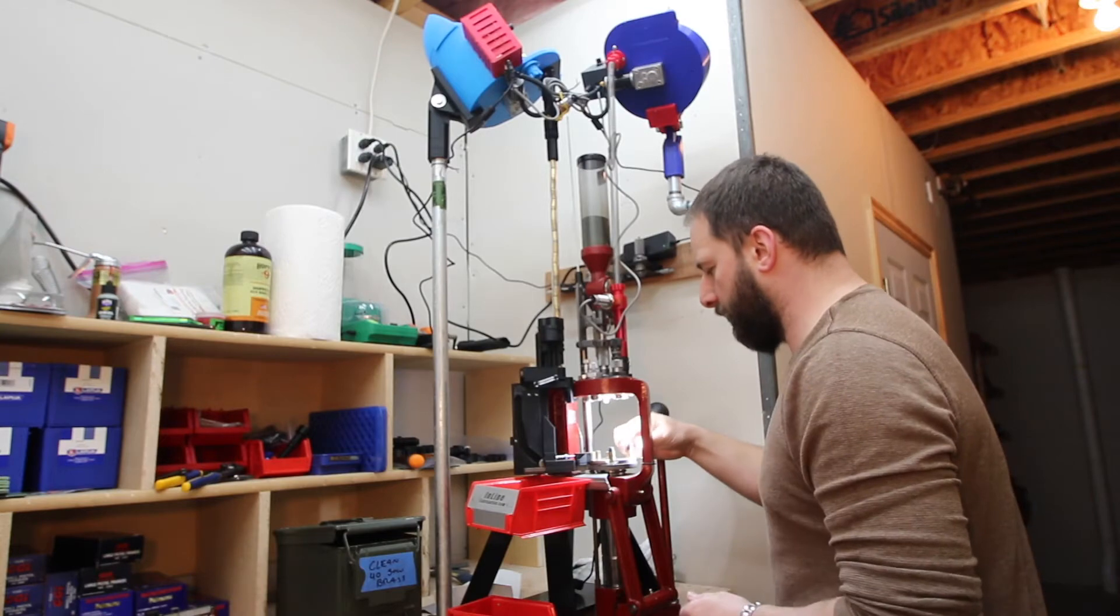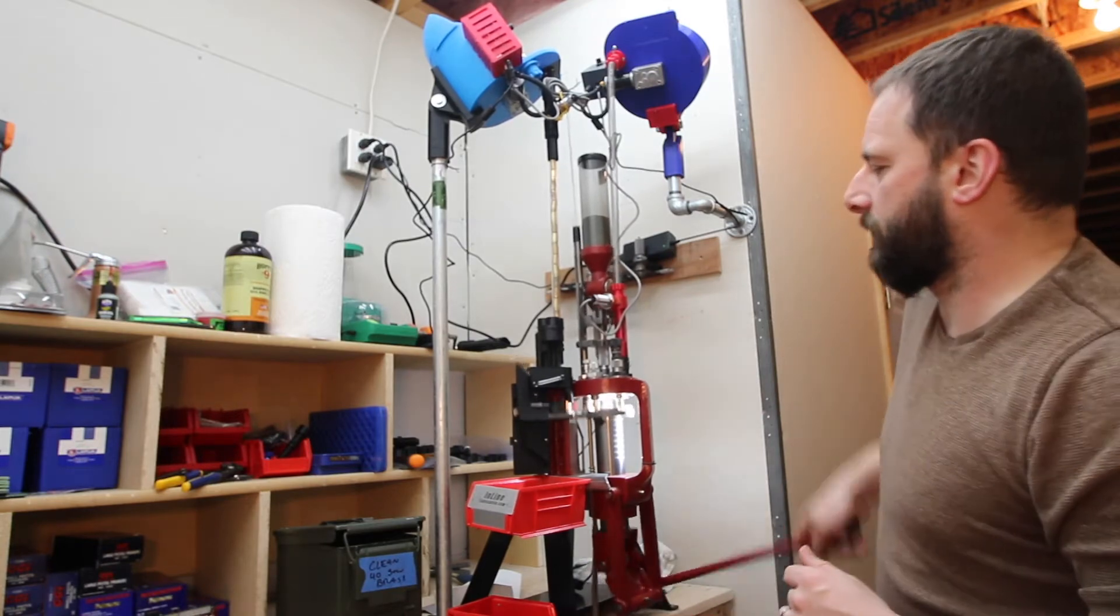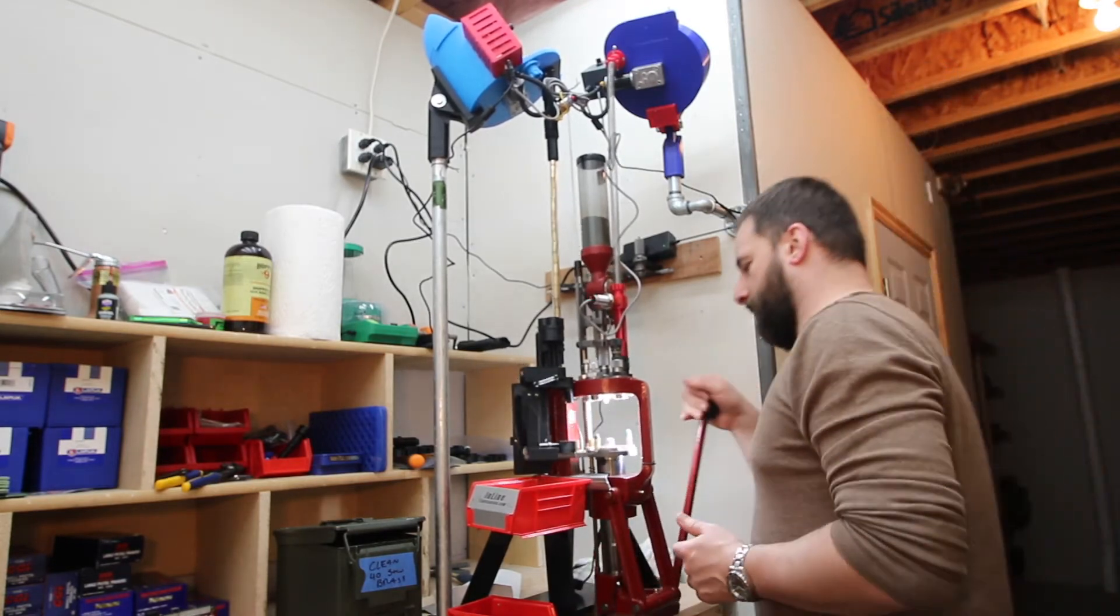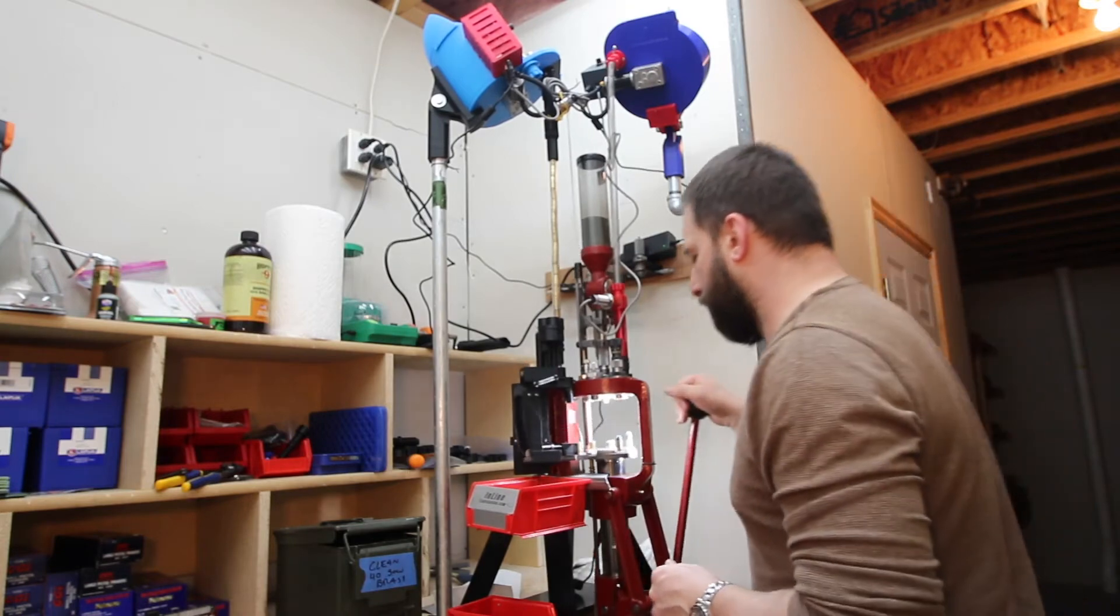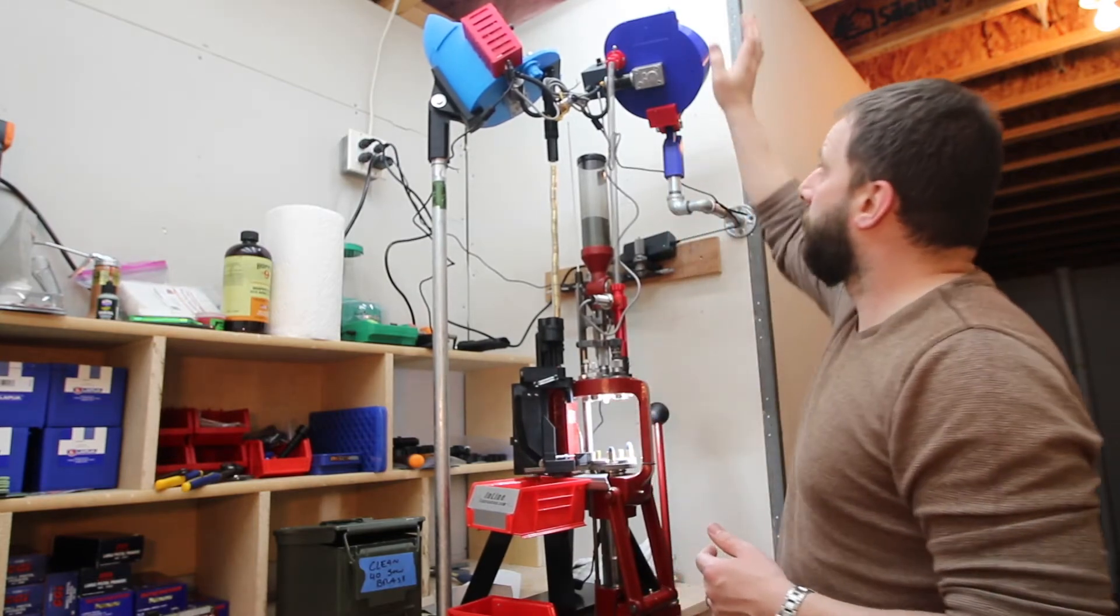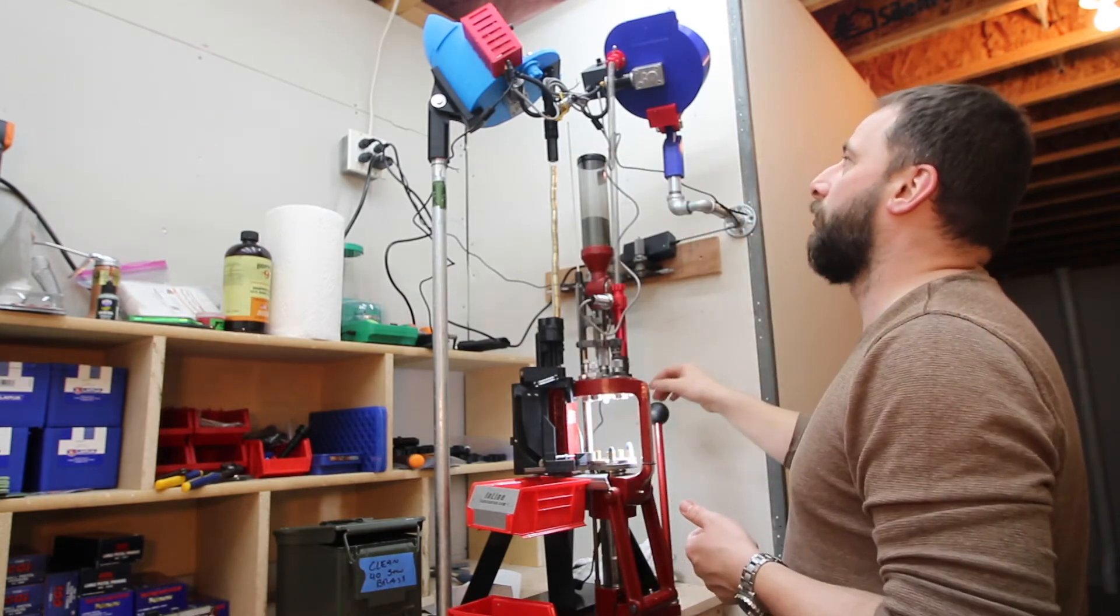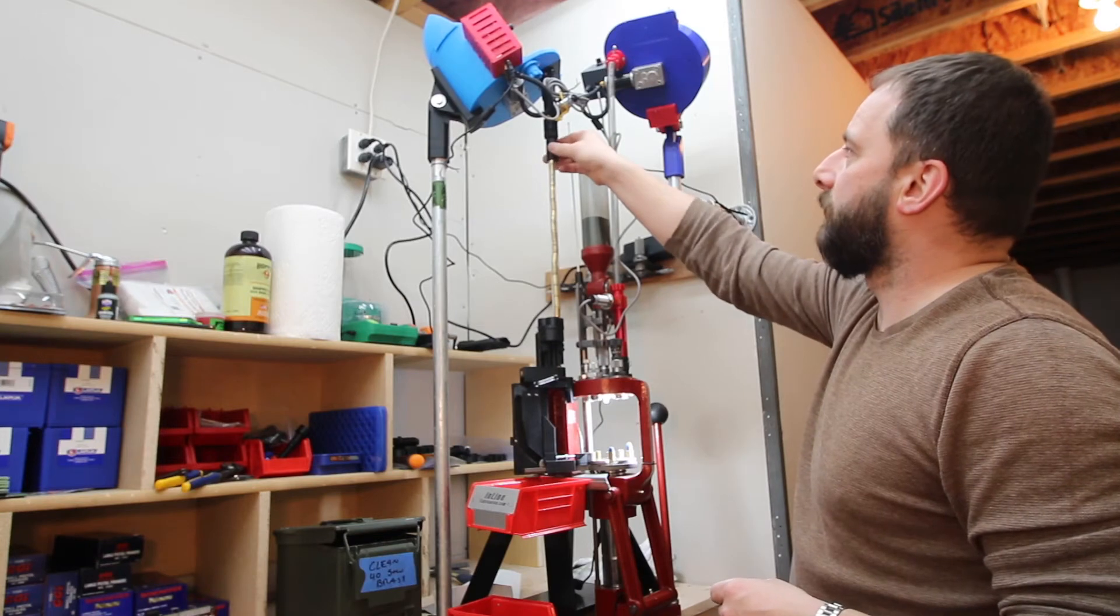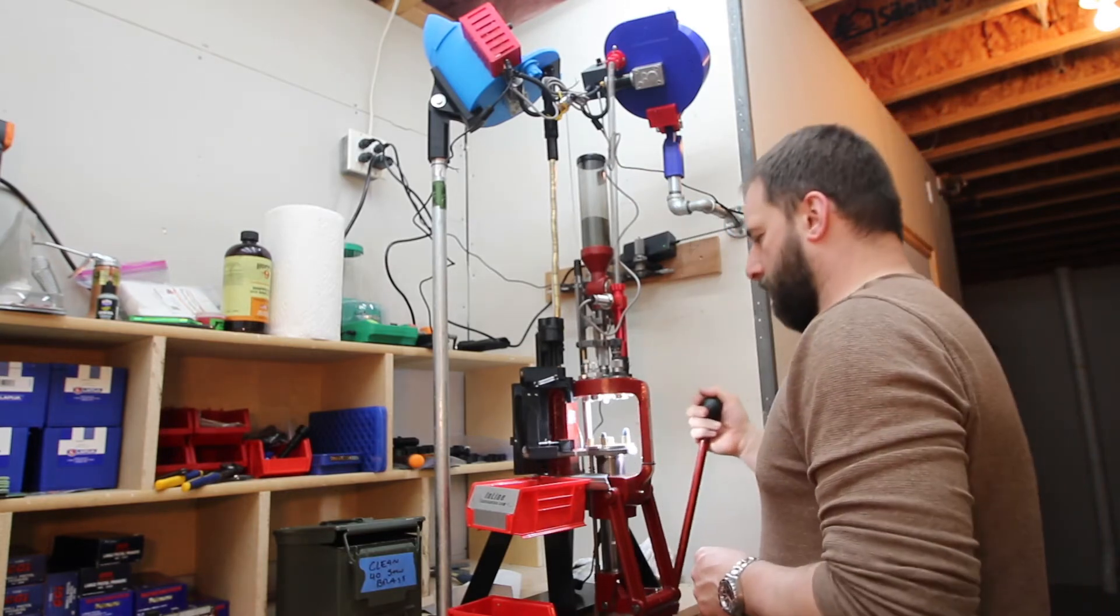Everything's humming along fine. The one thing I don't like about this setup is I lose my powder check die. But in the end, as long as I'm watching this, I should be fine. You can tell every couple of rounds, the bullet feed or the case feed will circulate and fill up a few more rounds. It works pretty well. It looks like I had a piece of brass that got hung up, so I'll have to play with that later. But not a big deal.